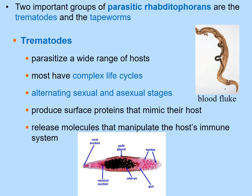Two major parasitic groups within Rhabditophora are trematodes and tapeworms. Trematodes are parasitic flukes with complex life cycles; they can alternate between sexual and asexual stages and can evade the host's immune system by mimicking host surface proteins and releasing immunosuppressive molecules. They are hermaphroditic, with both testes and uterus present in the same individual.